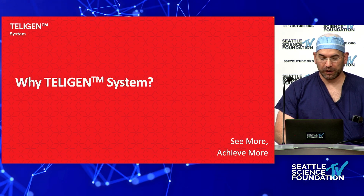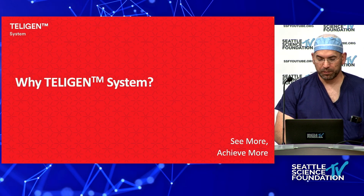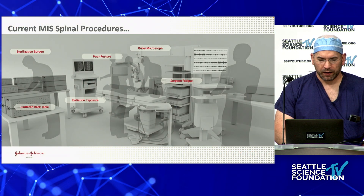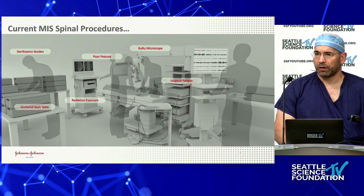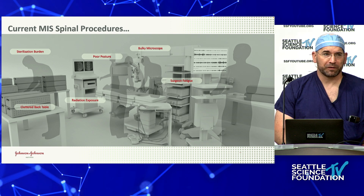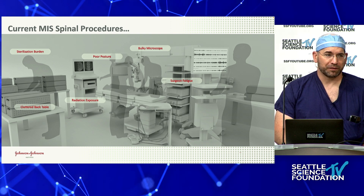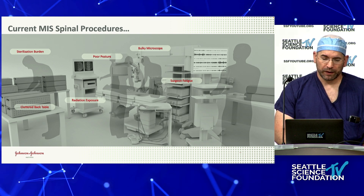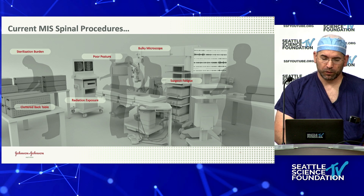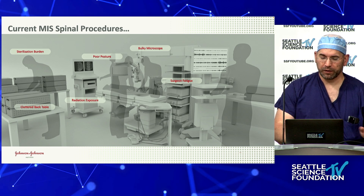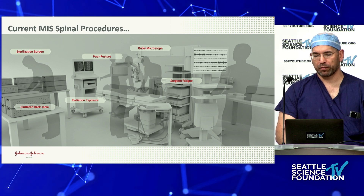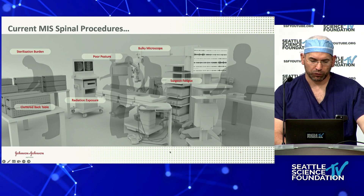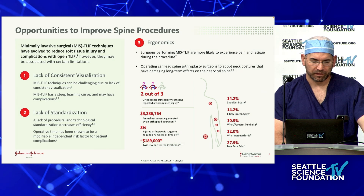Why do we do Intelligence? What is the impetus behind this? The issue was, as we all know, with MIS surgery, the smaller the incision, the more clutter we have in the room typically — more equipment. And what they were trying to do was narrow it down, make it more user-friendly and streamlined. We can see here a typical room with all the equipment that we have.